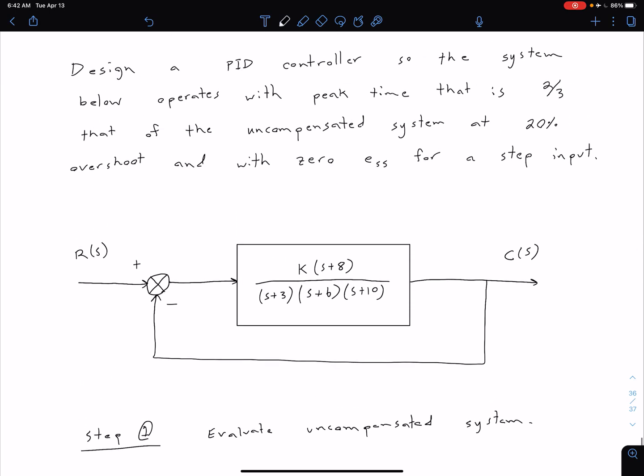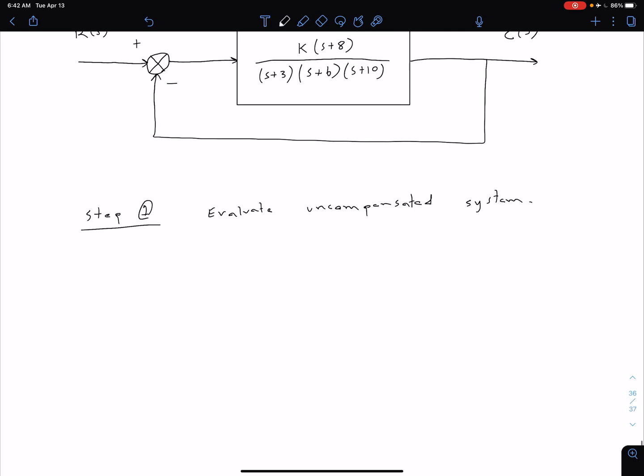A couple of things that we can talk about. First of all, let's look at this 20% overshoot. We could use that equation we've seen before to relate our percent overshoot in our damping ratio. And we see that this corresponds to a damping ratio that's approximately 0.456.